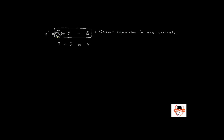Every equation has two sides — one on the left and one on the right, separated by the equal sign. You are allowed to add, subtract, multiply, and divide both sides of an equation with the same number.